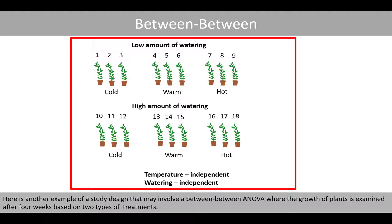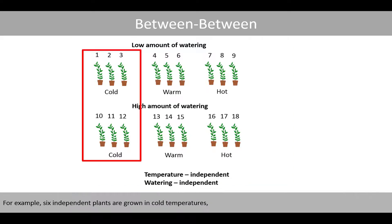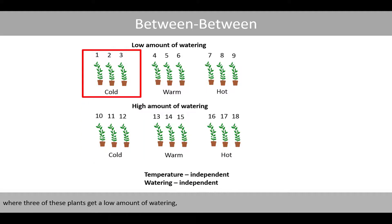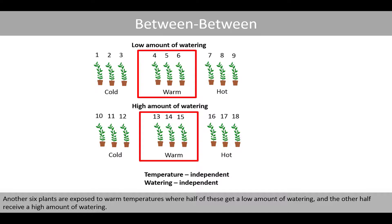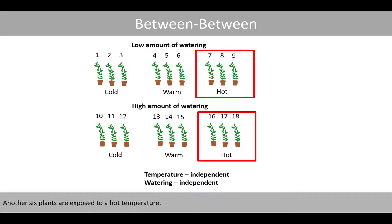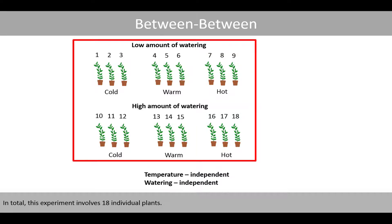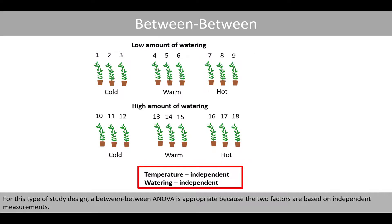Here is another example of a between-between ANOVA where the growth of plants is examined after four weeks based on two types of treatments. Six independent plants are grown in cold temperatures, where three get a low amount of watering and three get a high amount. Another six plants are exposed to warm temperatures — half with low watering, half with high — and another six plants to hot temperature. In total, this experiment involves 18 individual plants. A between-between ANOVA is appropriate because both factors are based on independent measurements.